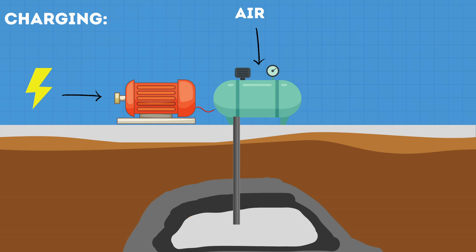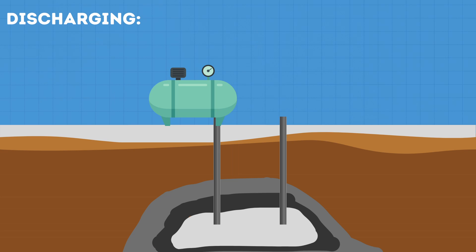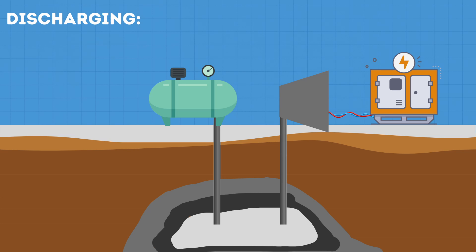When it's time to discharge because the grid needs electricity, a valve lets the compressed air flow towards a series of turbines connected to a generator. As the air expands, it cools down, so you want to heat it up to increase the electricity that can be produced.